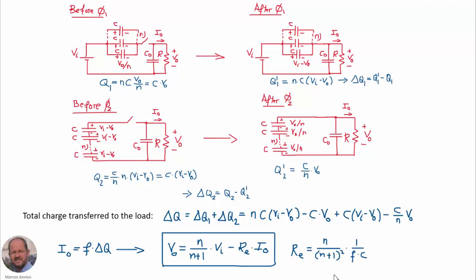We can see that the equivalent resistance is much lower than 1 over fC. If n is much greater than 1, then the equivalent resistance tends to 1 over n times 1 over fC. Because this is a converter with a gain lower than 1, we have an equivalent resistance which is lower than the factor 1 over fC.